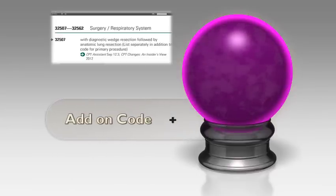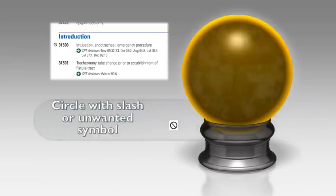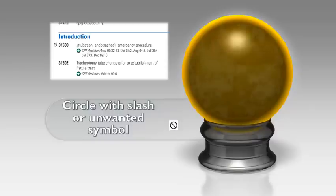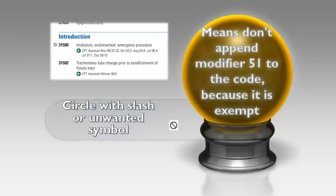The add-on code symbol — the bold plus sign — means you use this code in addition to another code. Never sequence an add-on code first, and never apply modifier 51 to it. The circle with the slash means do not append modifier 51 to the code because it is modifier 51 exempt. On the board exam, you will see a code like 31500 with a 51 modifier as a wrong answer choice — they want to make sure you know your symbols and rules.